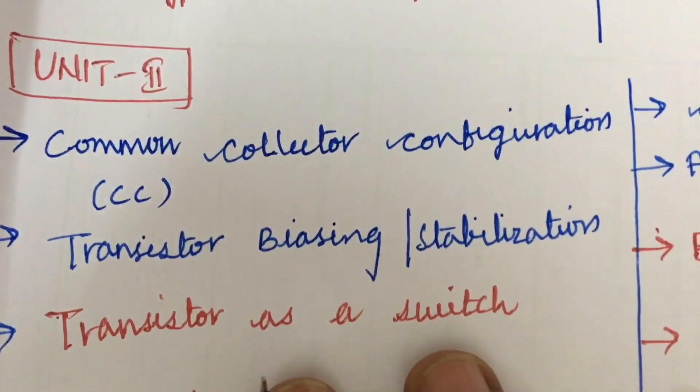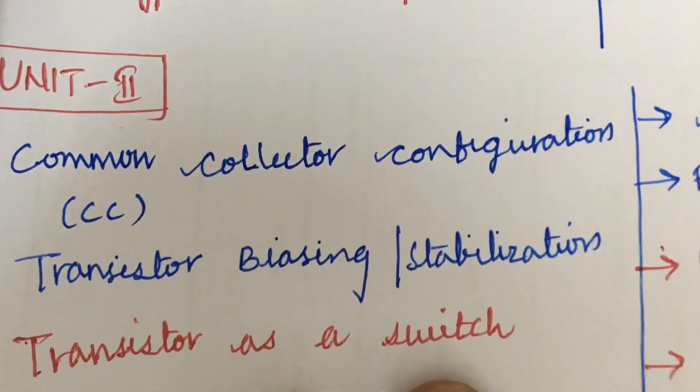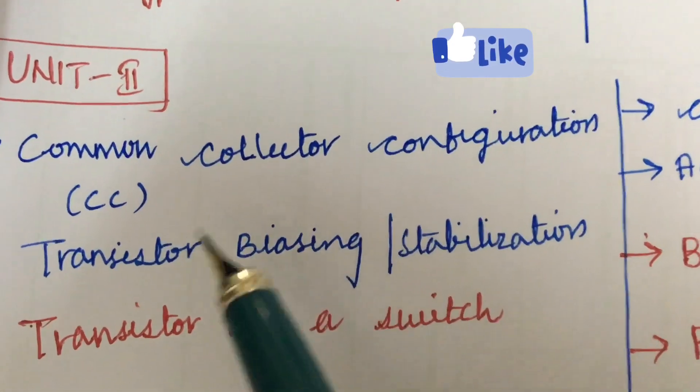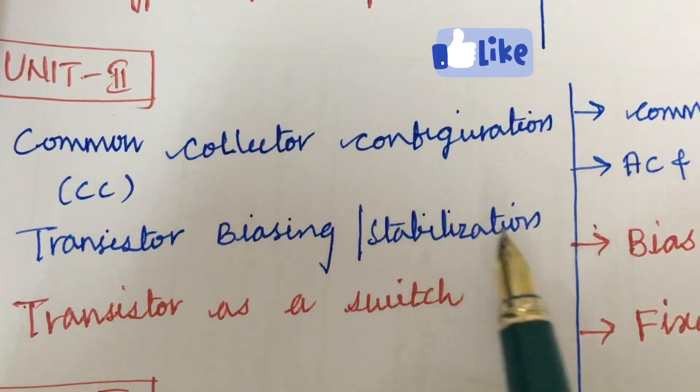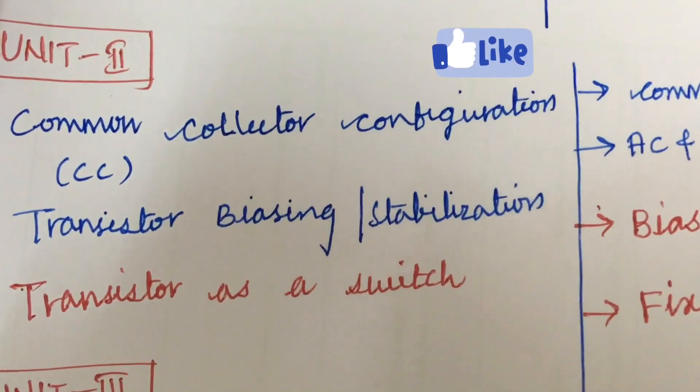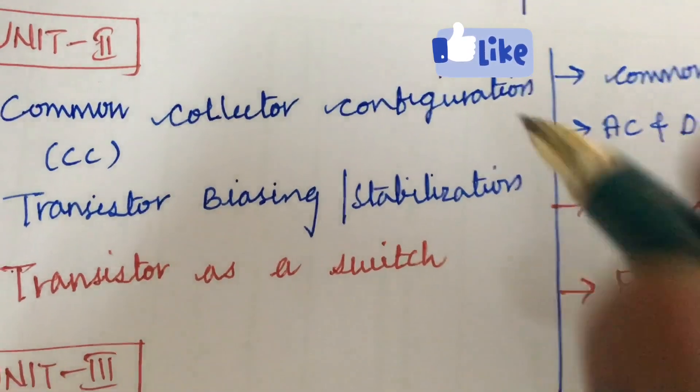Next we look at the second question. It is very short and you can work out easily CC configuration - I mean common collector configuration, transistor biasing along with stabilization, and transistor as a switch working and the problems related to it.